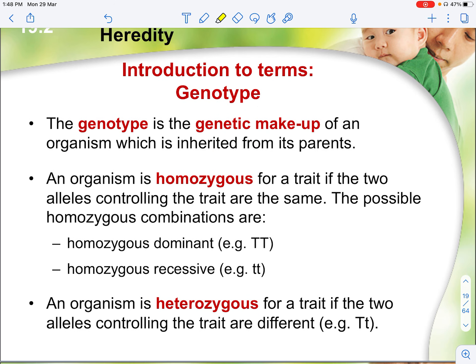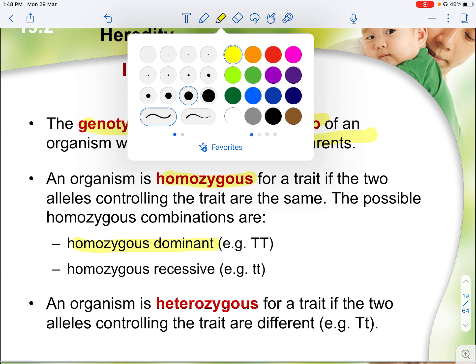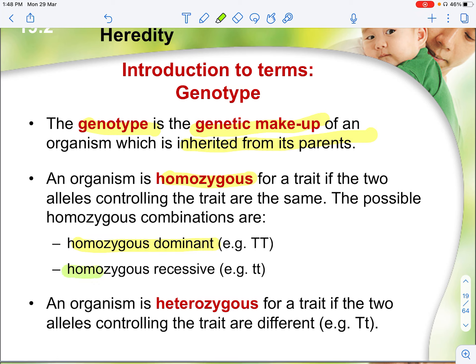Genotype is the genetic makeup of an organism inherited from its parents. If both alleles are similar, we call it homozygous — homozygous dominant if both are dominant alleles, or homozygous recessive if both are recessive alleles. If both alleles are different — one dominant and one recessive — we call it heterozygous. There is no distinction between 'heterozygous dominant' or 'heterozygous recessive'; the term heterozygous alone is sufficient.